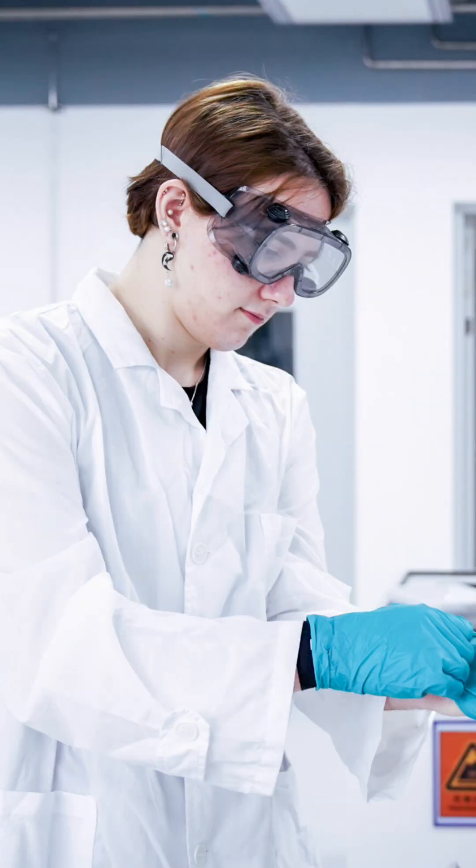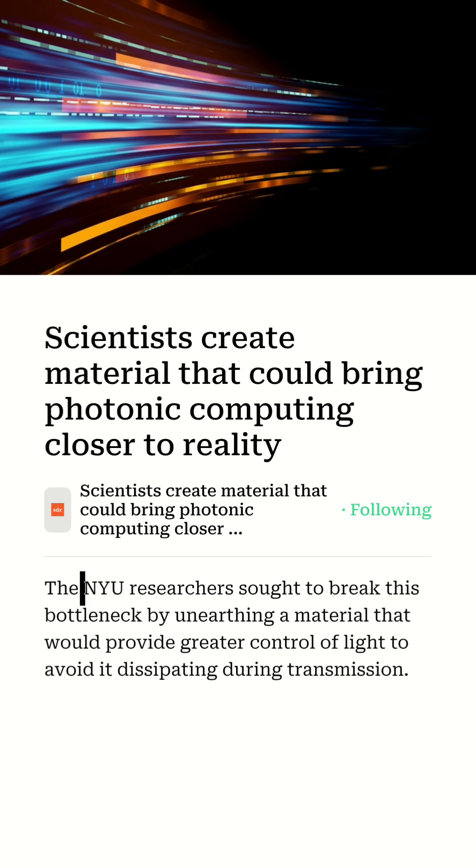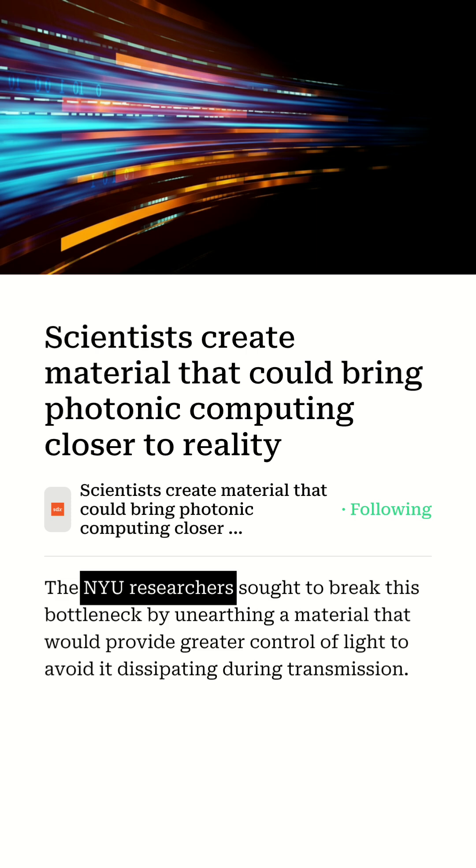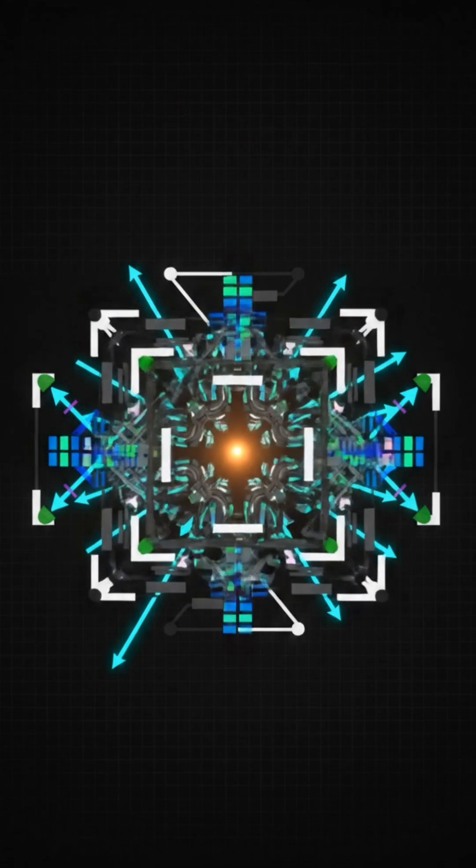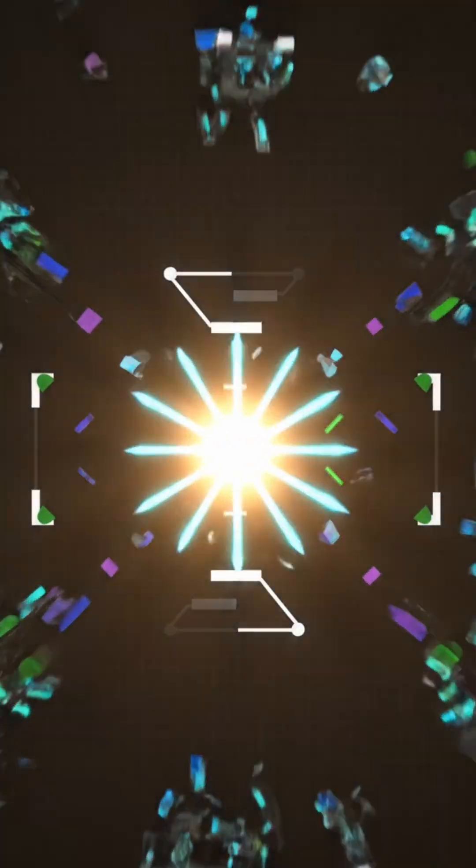Stop scrolling. Scientists just announced a new material that could make computers insanely fast. They're called gyromorphs, and they might be the key to unlocking photonic computers, machines that calculate with light.